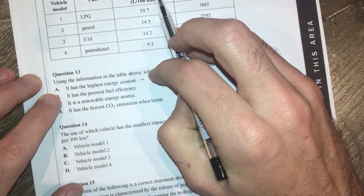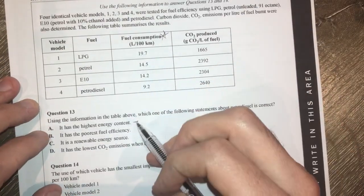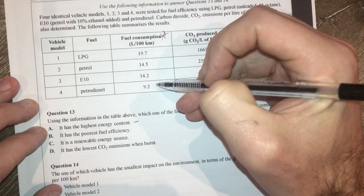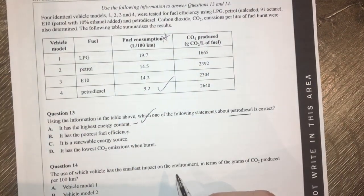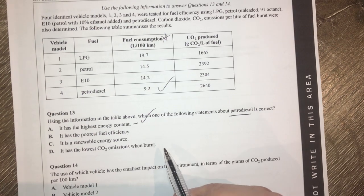Highest energy content is going to be about this one here. And if you're going to use the lowest amount of fuel, you're going to have the highest amount of energy. So therefore, looking at this, that looks pretty good. Petrodiesel has the lowest fuel consumption, so therefore it must have the highest energy content.